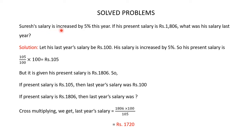Suresh's salary is increased by 5% this year. If his present salary is Rs.1,806, what was his salary last year? We have to find Suresh's last year's salary. Let his last year's salary be Rs.100. His salary is increased by 5%, so his present salary is Rs.105. But it is given that his present salary is Rs.1,806. So if the present salary is Rs.105, then last year's salary was Rs.100. So if his present salary is Rs.1,806, then his last year's salary is 100/105 × 1,806.